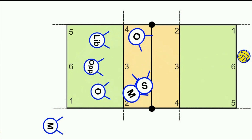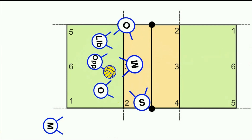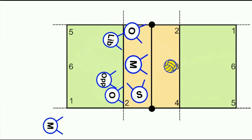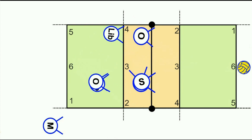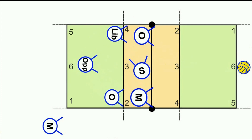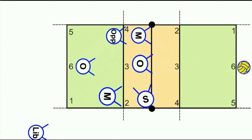We rotate to the last serve-receive position — this is the easiest one. The setter is at position three, they just need to move into two, and the middle needs to move into three. After the ball goes out, we go back into our positions, win the serve and lose it, so we rotate around again — and we're back to the start where the middle player has just swapped over the Libero onto the frontcourt.